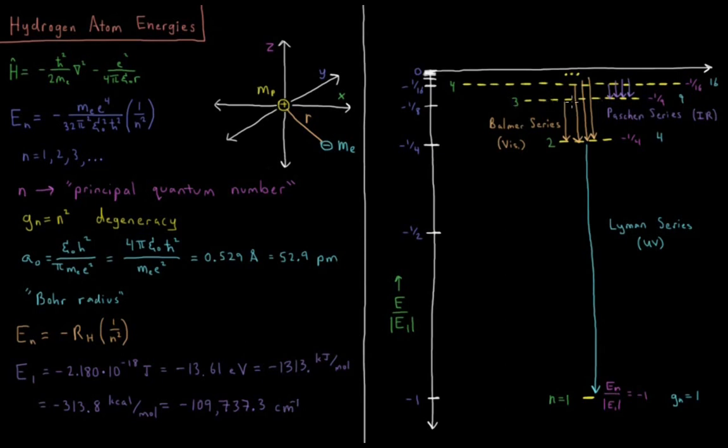For n equals 3, we have 9 states. n equals 4, we have 16 states. After that, it becomes very difficult for me to draw, so I stopped. You can use your imagination for states beyond n equals 4 for that n squared level of degeneracy.